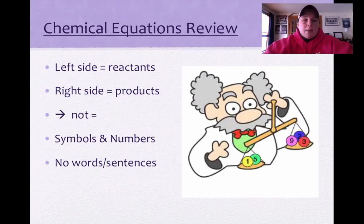So, chemical equations review. Just a quick vocab review for you. Remember, reactants are on the left, products are on the right. We use arrow, which of course we say yields and not equals. Symbols and numbers, no words and sentences.